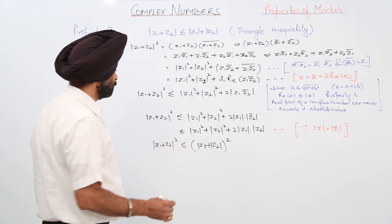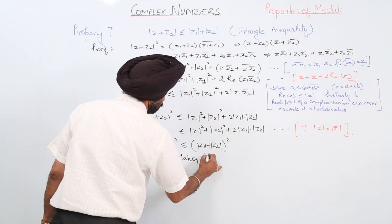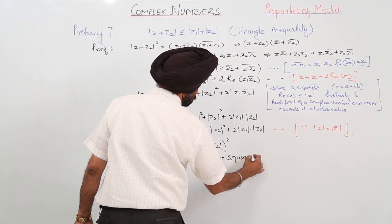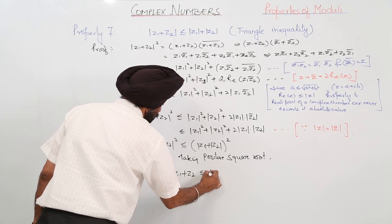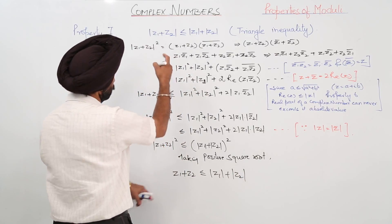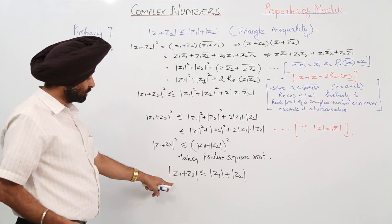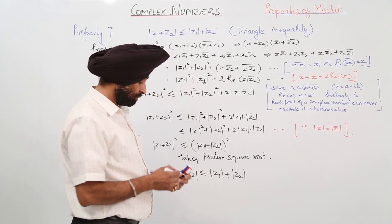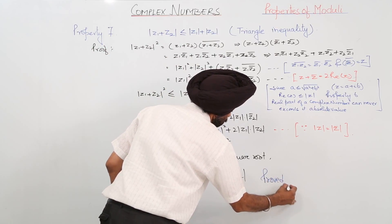Taking the positive square root of both sides: |z1 + z2| ≤ |z1| + |z2|. This means the modulus of the sum z1 + z2 is always less than or equal to the sum of the individual moduli |z1| and |z2|. Proved.